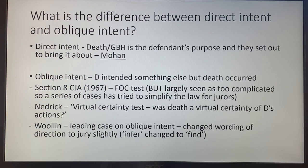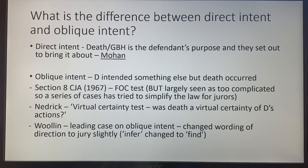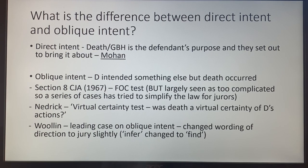This is probably the most complicated part of the course. What is the difference between direct intent and oblique intent? Direct intent is simply where you intended to kill or do GBH — the defendant's purpose was to bring it about. Mohan describes intent as a decision to bring about a prohibited consequence. So direct intent is where killing or GBH is exactly what you intended to do; if the prosecution can prove that, you have the mens rea.